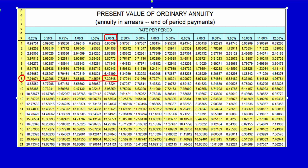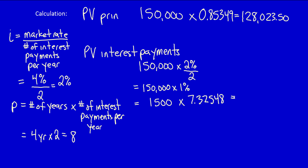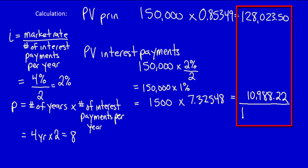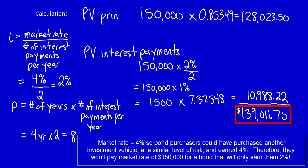Taking $1,500 and multiplying it by the factor 7.32548 gives us the present value of all future interest payments. Adding both present values together gives us $139,011.70. This is lower than the face amount of $150,000 because the bond purchasers could have purchased an investment vehicle that would earn higher interest in the open market at the same level of risk.